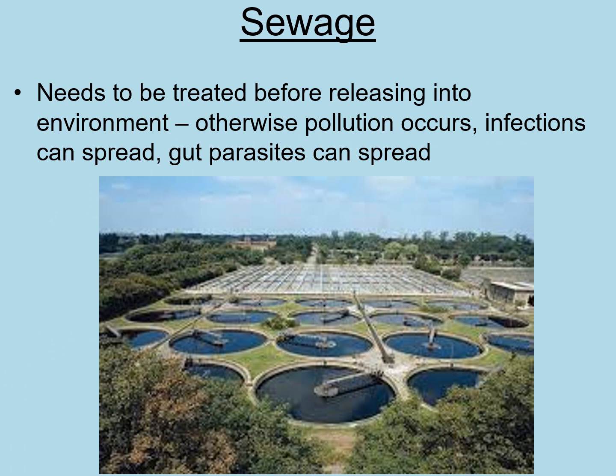Let's look at sewage first. When you flush your toilet or water rinses down the plug hole from the shower, all of that water goes through pipes to a sewage works. There can be all sorts in there — cosmetics, cleaning substances, chemicals, and human waste. We can't just flush that out to sea or dump it in a field because you'd get bad pollution, infections, organisms affected by microbes, and gut parasites could spread, so it has to be treated.